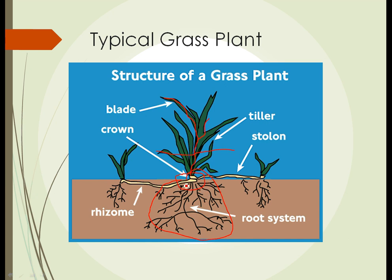Grass plants can reproduce both sexually and asexually. Asexually, or vegetatively, they have two methods of reproduction which are very similar. In one, they send out a rhizome, which is a specialized stem that grows beneath the surface of the soil, and a new grass plant is developed at the end of the rhizome. The second method is to send out a similar structure called a stolon, but the stolon grows on the surface of the soil, and a new grass plant will grow on the end of that.